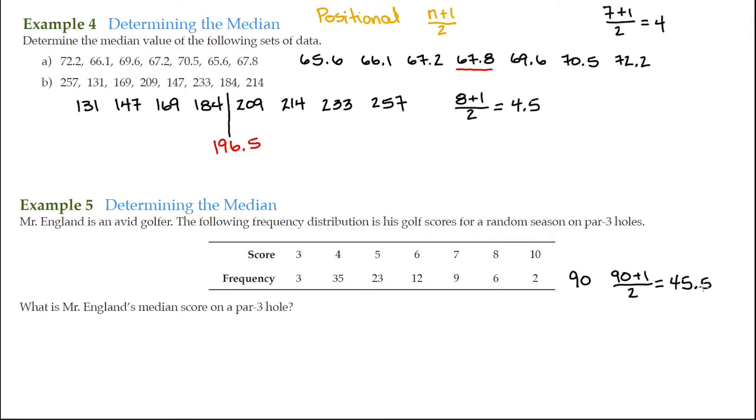So that's the 45 and a half position or between the 45th and the 46th data value. This is an even number. It's going to fall right in between two of the numbers. So this is what it looks like. If I scored 3 or if Mr. England scored 3, 3 times, he would have a 3 and another 3 and another 3. If he scored a 4, 35 times, then he would have a 4 and a 4 and a 4 and this would continue for 35 times.